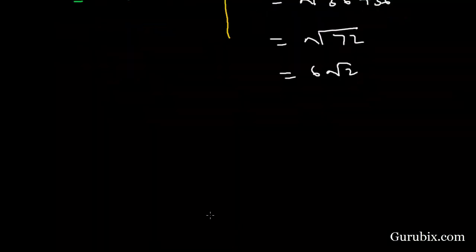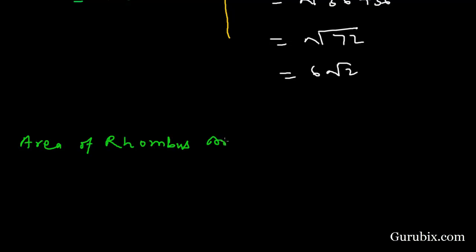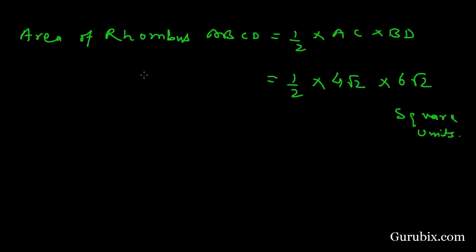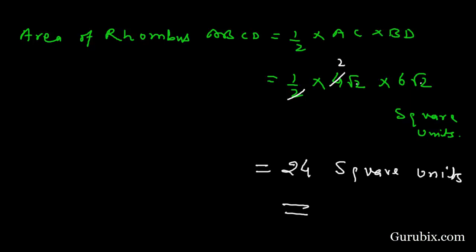Now we have the length of both diagonals. Area of rhombus ABCD equals one-half times diagonal AC times diagonal BD, which is one-half times 4√2 times 6√2. Simplifying: 2√2 multiplied by 2 is 4, and 4 times 6 is 24. Therefore the area of the given rhombus is 24 square units. Thank you.